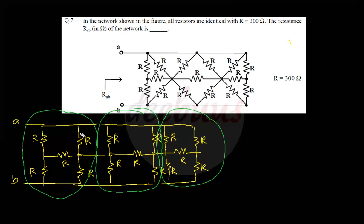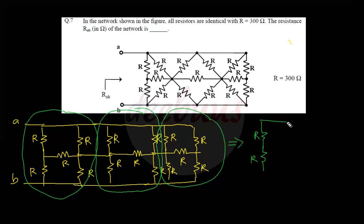The bridge is balanced because R/R = R/R — the left-hand side upper resistance divided by lower resistance equals the right-hand side upper by lower resistance. Therefore there will be no current flow through the middle resistance. The same applies to this portion and again the same for the next portion.